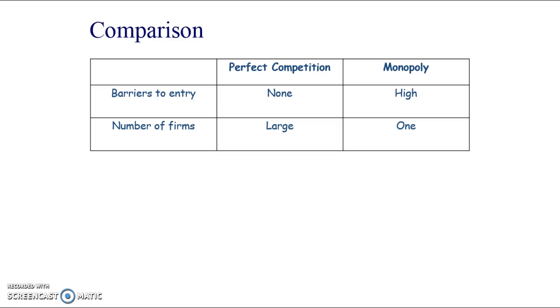With perfect competition, there's no barriers to entry, so there's a large amount of firms in the market. Therefore, the market share for perfect competition is very low, whereas the market share for monopoly is very high to the extreme that it is 100% in a pure monopoly.